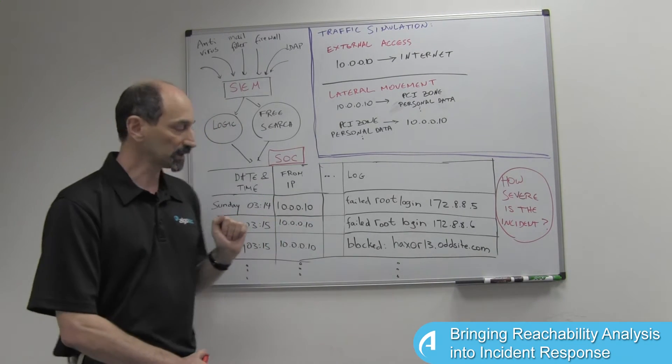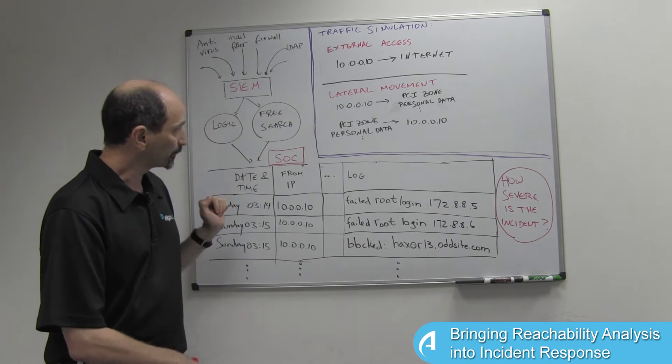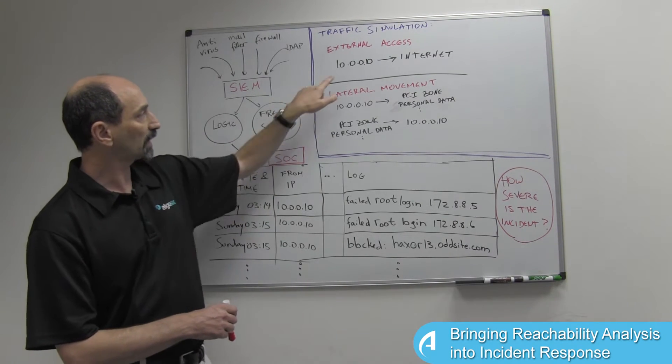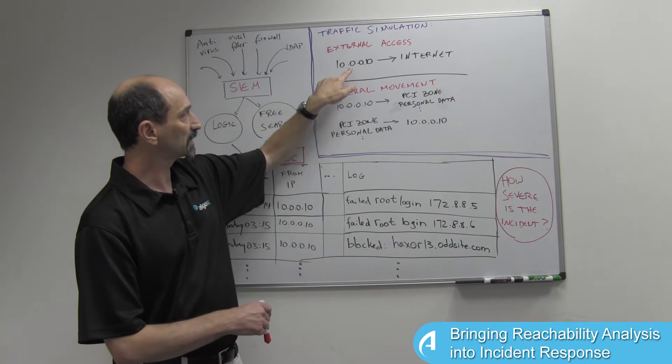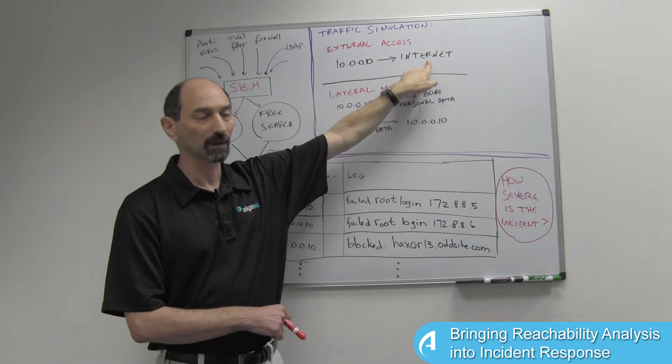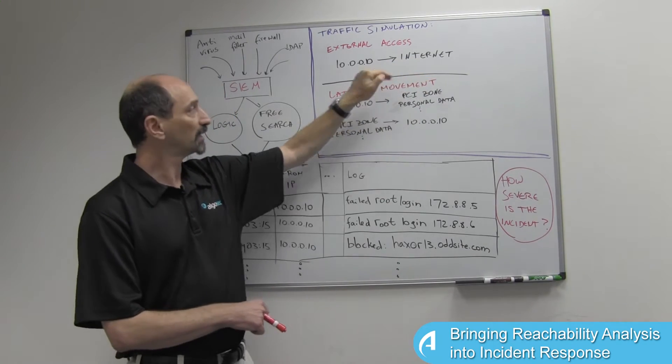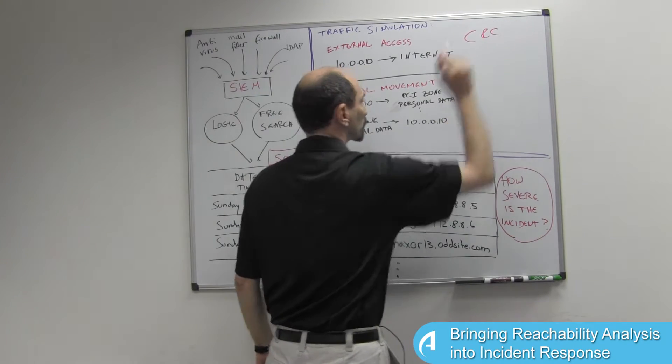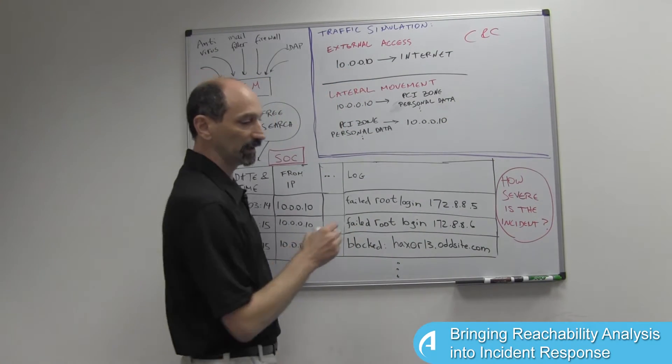So how would we do this? Here are a few examples. If we take the infected server's IP address and check whether it has access out towards addresses in the internet, if it does, then this system could be used to access the command and control center of the adversary.